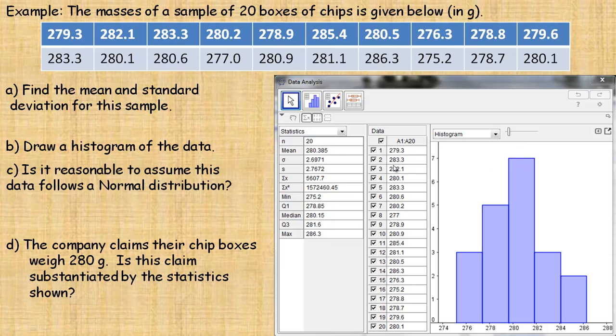So 279.3, 283.3, next number is 282.1. So here's all the numbers, and of course 280.1 is the very last one here, there's 20 of them. And so the mean is this value, and that's the sample standard deviation right there, 2.7672. So here's my mean and standard deviation. I rounded the standard deviation to two decimal places.